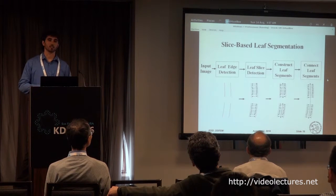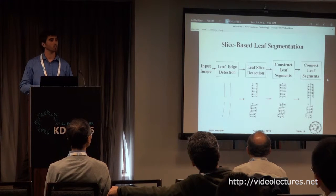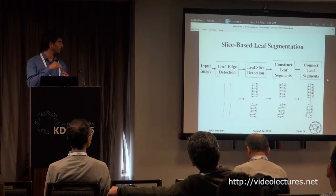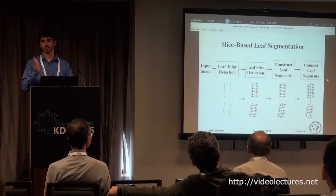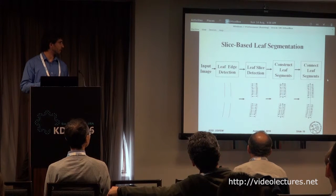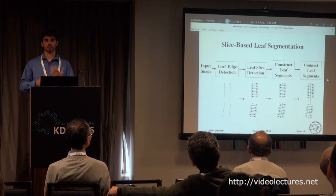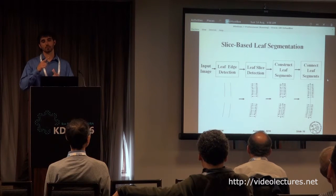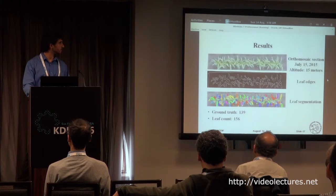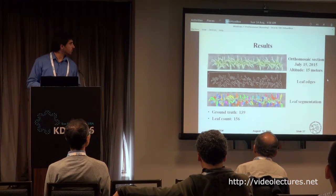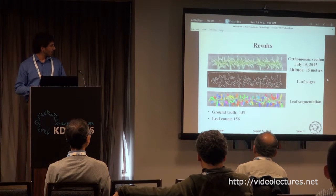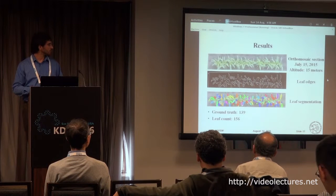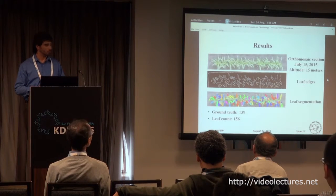We use a technique similar to stroke width transform, which was developed by Microsoft to detect text. Using this, we detect leaf slices, and then, assuming that the leaves are not too wide and are, to a certain extent, straight, we construct leaf segments. From them, we connect to build full leaves. The reason why there may be more than one leaf segment per leaf is that there may be leaf crossings, so we try to avoid these situations. This is a result from the orthomosaic section from July 15 of last year. You can see that even though the leaf count is not too far from the ground truth, there's still some room for improvement, especially due to the false negatives.